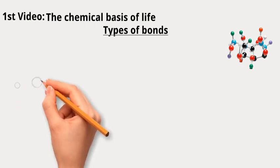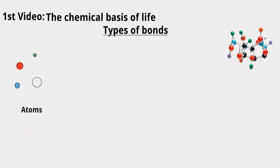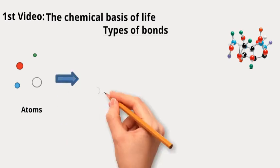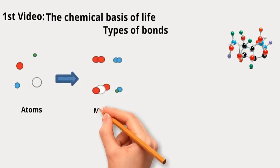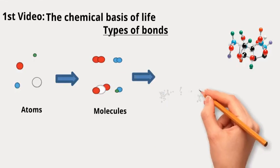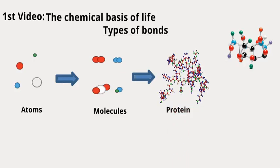Life starts with tiny things called atoms. These are the building blocks of everything. They decide what things are made of, how they interact, and how they behave. Atoms team up to make molecules. These molecules join together to create big and complex structures like proteins, which are like the worker bees inside cells. Considering the bonds that link atoms together, we can classify them into covalent and non-covalent bonds.